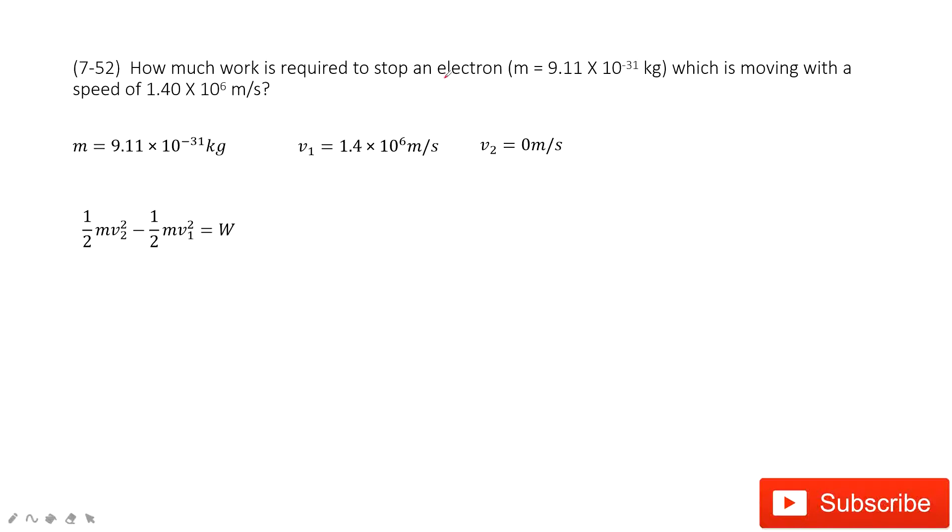As you can see, for this electron, we know its mass and its initial velocity is given. The final velocity is also given because it stopped. So the question asks how much work is required.